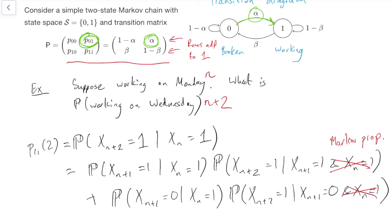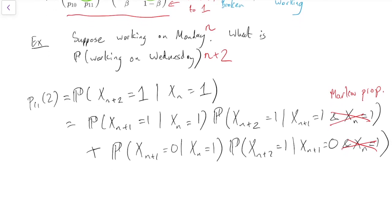But this is looking rather good now, because now we've written down just a bunch of one-step transition probabilities, and we know what they are. This is a P11 and another P11. For the top two terms, the probability of going to 1 to 1. And then for the second two terms, we've got a probability of going from 1 to 0, and a probability of going to 0 to 1.